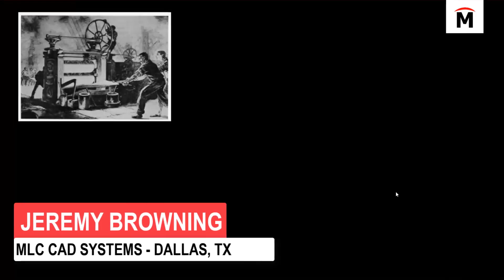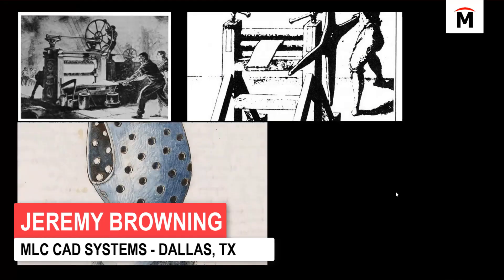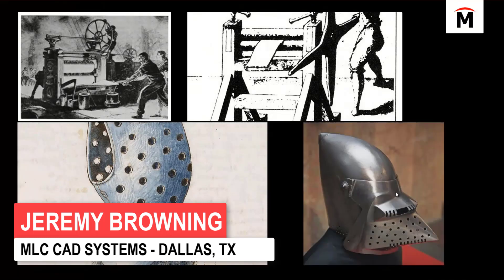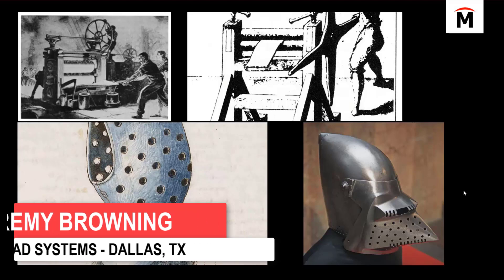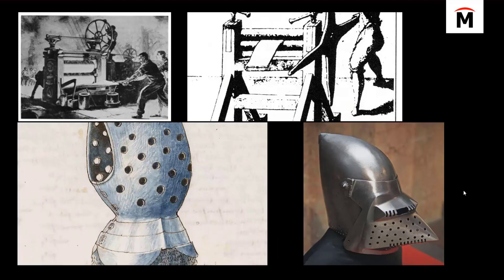Sheet metal is one of the fundamental forms of metalworking. We've come a very long way since sheet metal design started to show up many centuries ago. We can now use computers to intelligently design everyday items, enclosures, and supporting components.